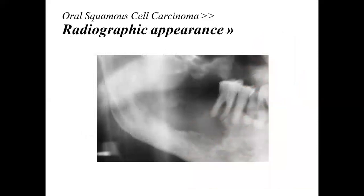Radiographically, oral squamous cell carcinoma primarily occurs on the mucosa but can also involve bone when it becomes very invasive. When a radiographic appearance like this is seen, two different diagnoses should be considered: osteomyelitis and oral squamous cell carcinoma.